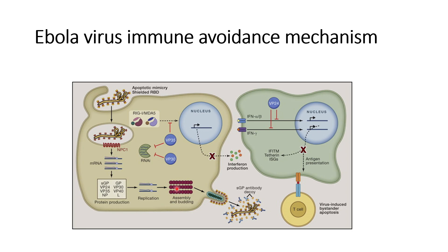Another way by which the Ebola virus suppresses the immune system is through RNAi, which usually suppresses gene expression through gene silencing. This RNAi function can be inhibited by VP30 and VP35.